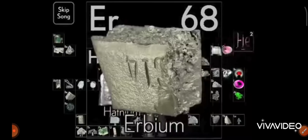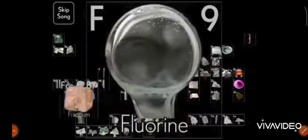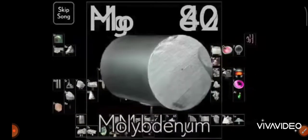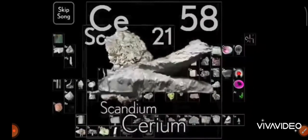There's holmium, and helium, and hafnium, and erbium, and phosphorus, and francium, and fluorine, and terbium, and manganese, and mercury, molybdenum, and magnesium, and dysprosium, and scandium.